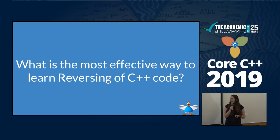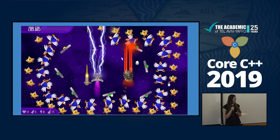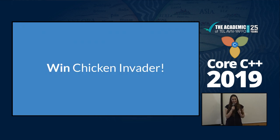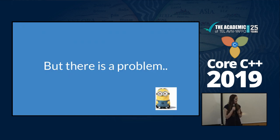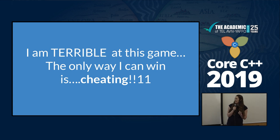So what is the effective way to learn reverse engineering of C++ code? Obviously, play Chicken Invaders and win Chicken Invaders. But there is a problem — I'm not good at this game at all. The only thing I can do is cheat, and make a way to make this game a bit easier so that I could win.